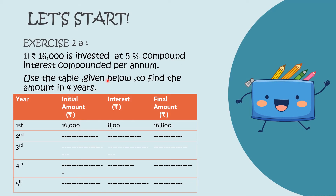First question: 16,000 is invested at 5% compound interest compounded per annum. Use the table given below to find the amount in 4 years. For the first year, the initial amount is equal to 16,000, interest is 800, and the final amount is 16,800.